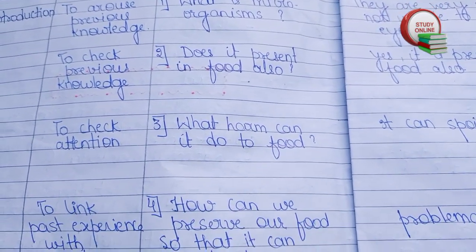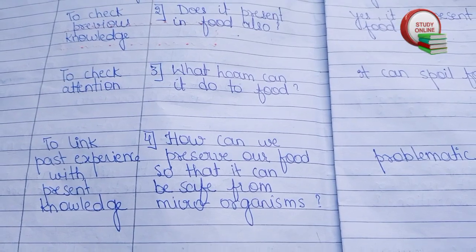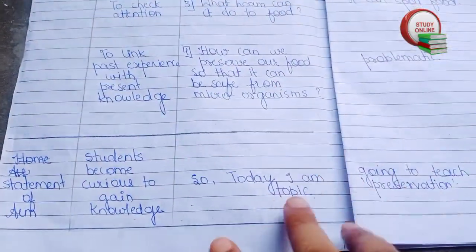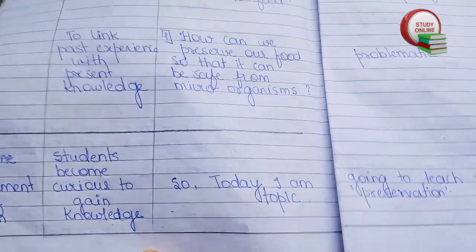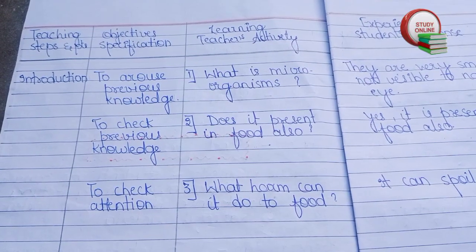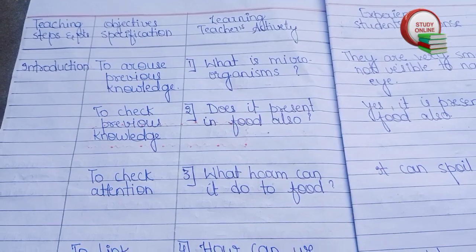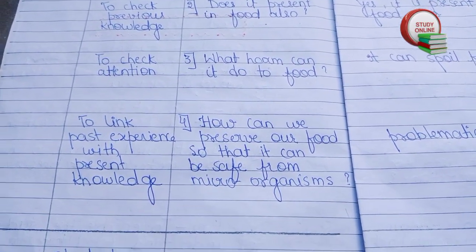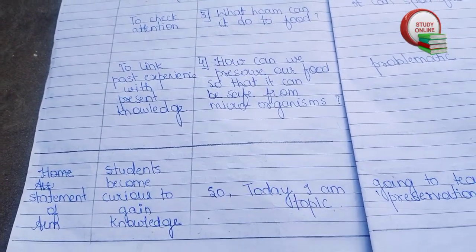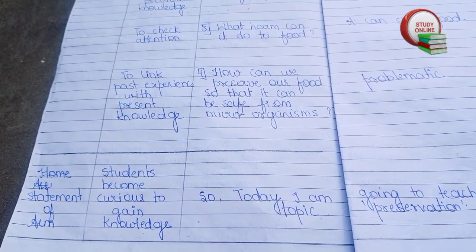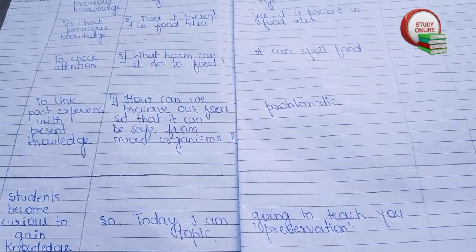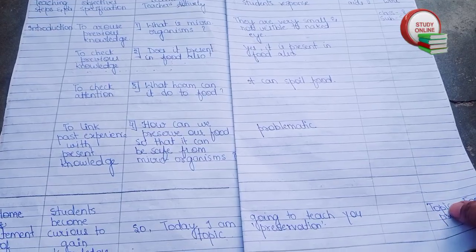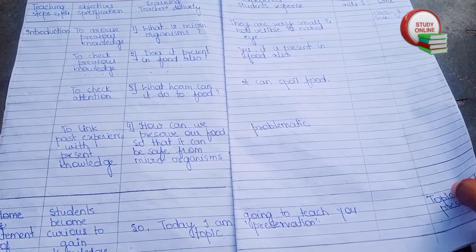Here you can see objectives and specifications. After that, we have to give a statement of our reading — we have to announce our topic. Here you can see the list of questions that we have to ask students, and the list of questions and answers. Like this, we have to make our introduction part, and this is the overall look of it.